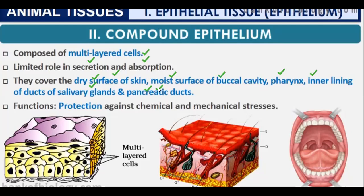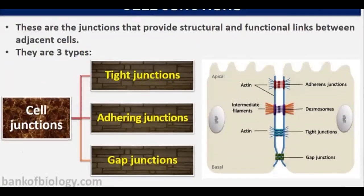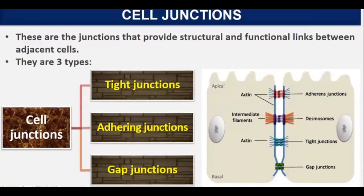The function of compound epithelium is to protect against chemical and mechanical stress — it acts like a cushion. Just as a cushion absorbs impact when you fall, compound epithelium acts as that cushion for our organs, saving them from mechanical and chemical stress.